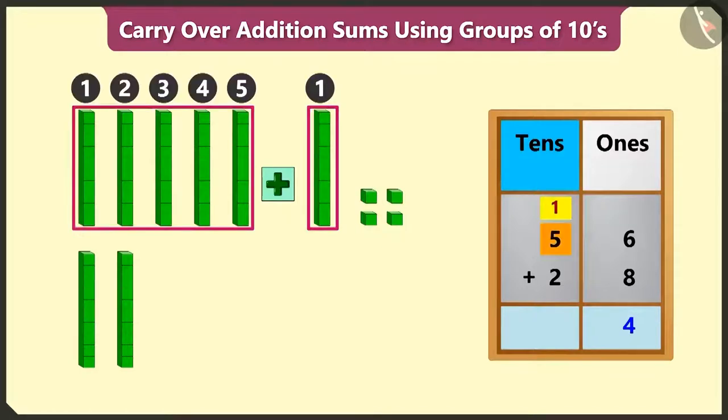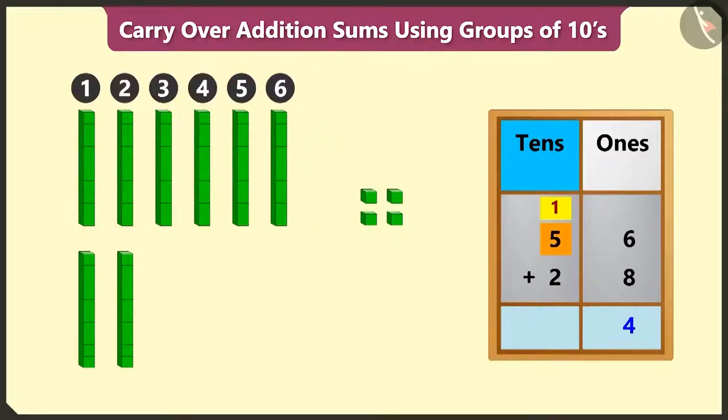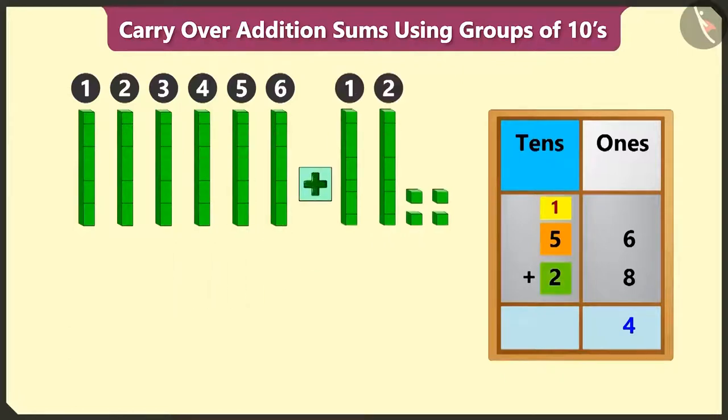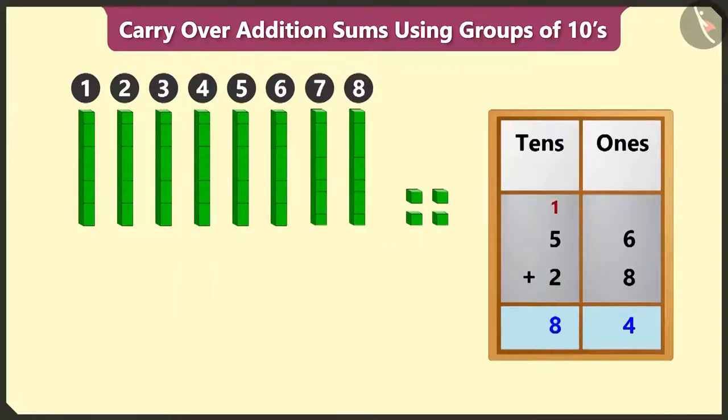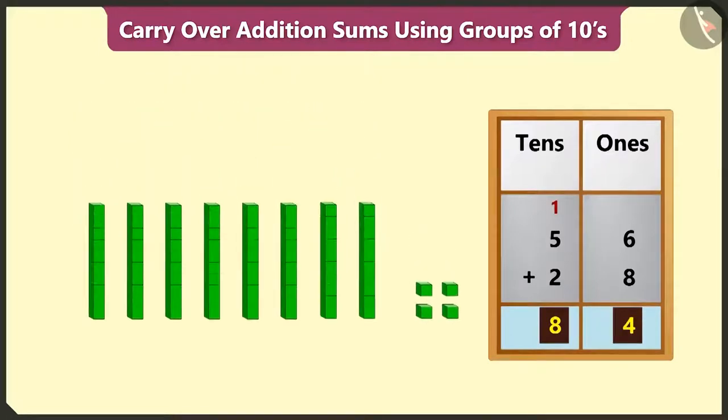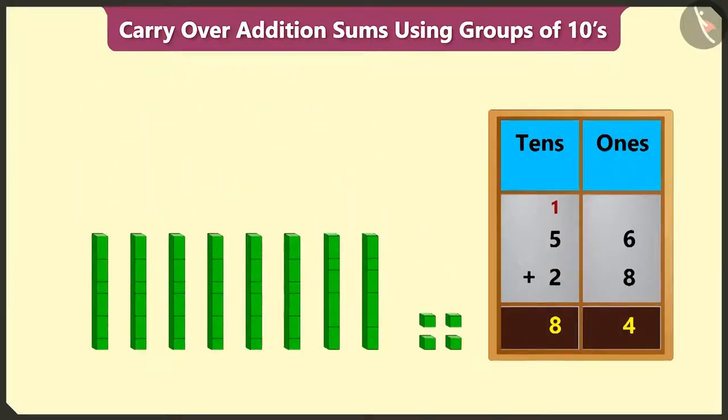Now, adding 1 and 5 will make 6 and 6 added to 2 will make 8. Now, 8 tens and 4 ones, which means we have to give 84 rupees.